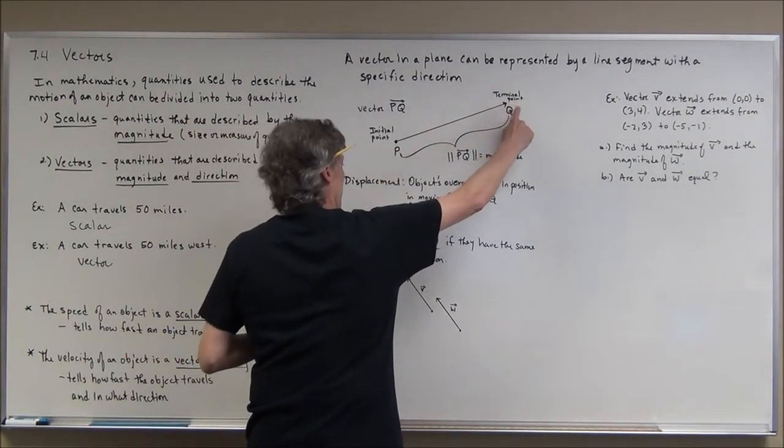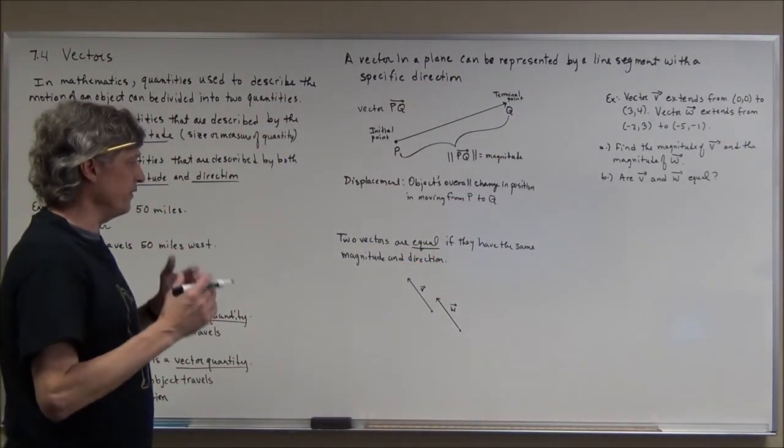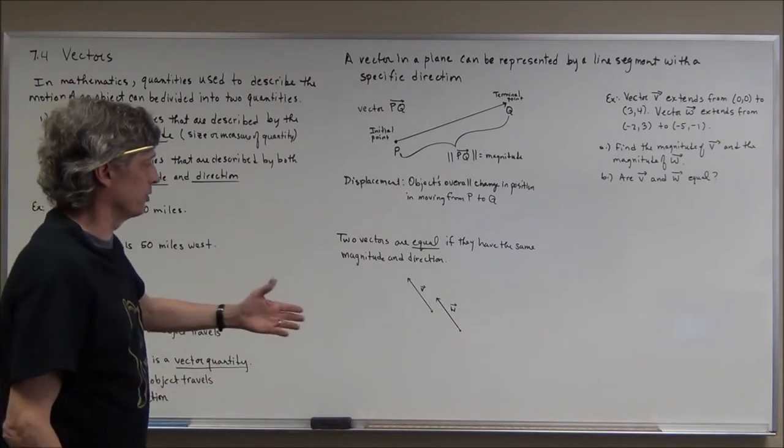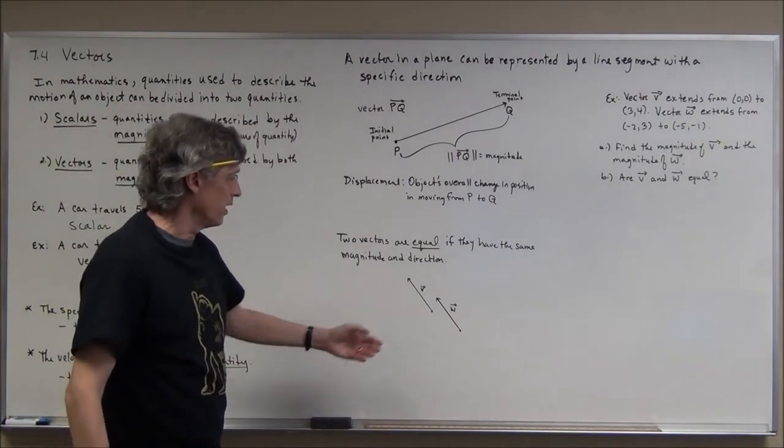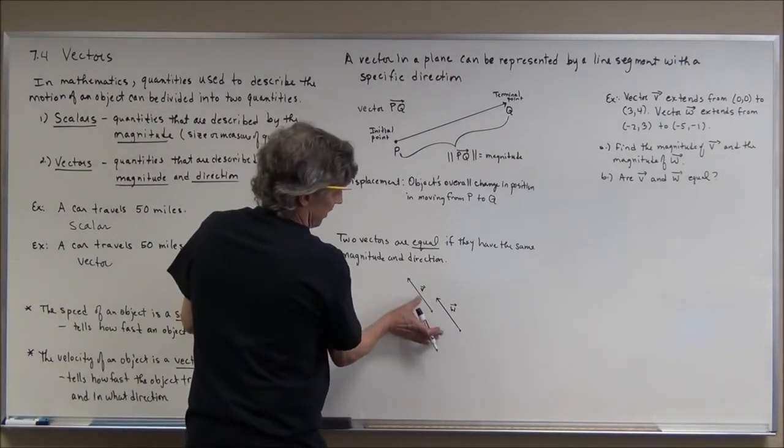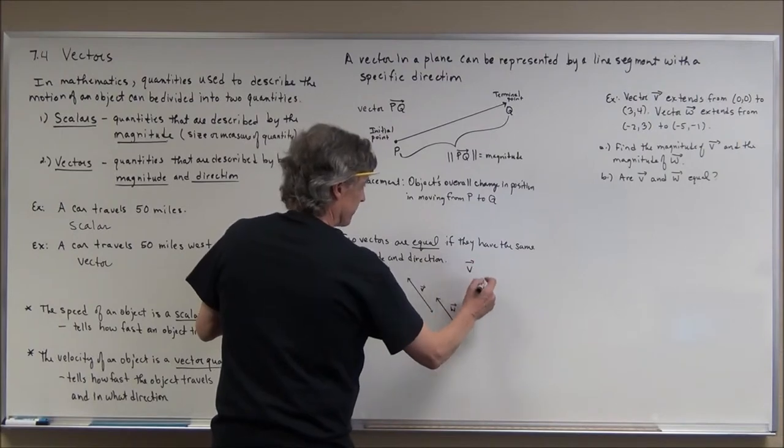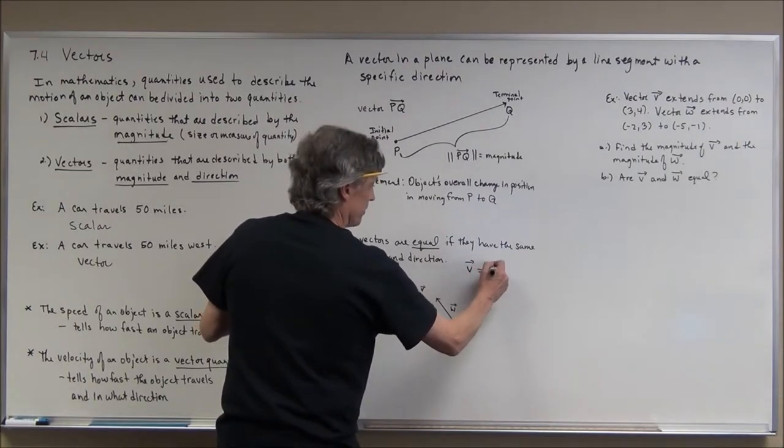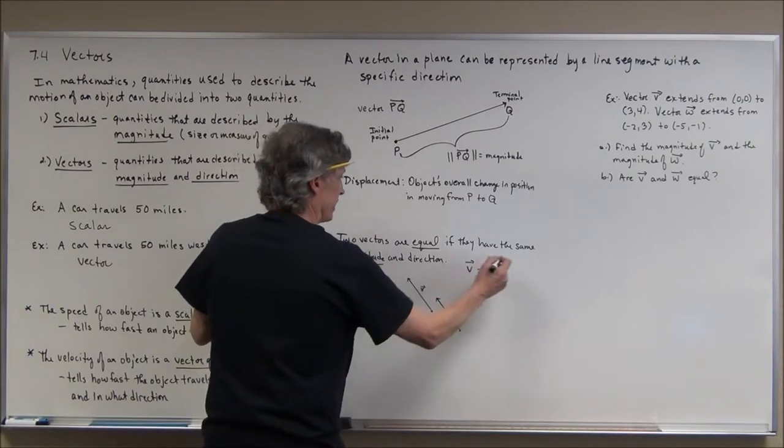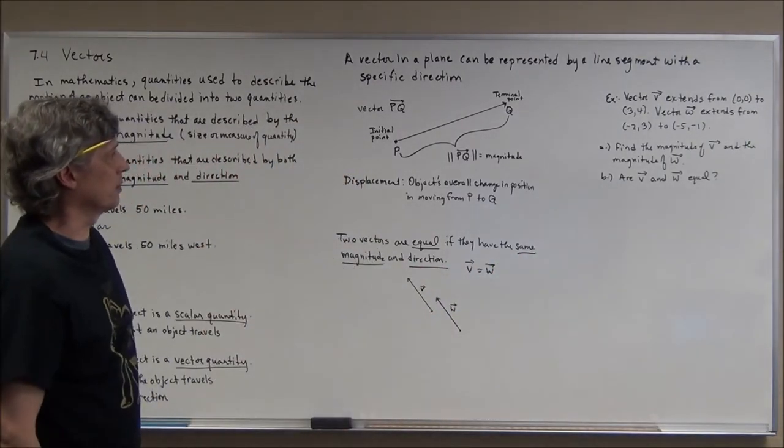Vectors are equal if they have the same direction and the same magnitude. I'll draw a couple vectors that appear to be in the same direction and also have the same length, so we would say vector v is equal to vector w. It has to have both - the same magnitude and the same direction. Let's try an example about equal vectors.